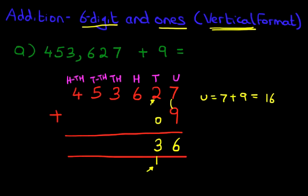And as for the rest of the digits, because we're adding zeros, they all remain the same. The hundreds remains 6. Thousands remains 3. The ten thousands remains 5. And the hundred thousands remains 4.